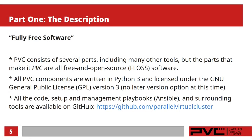All PVC components are written in Python 3 and licensed under the GNU General Public License, GPL version 3. At this time, I am strict with version 3 — I don't provide a later version option. That may change in the future, but I'm still apprehensive about the future of the Free Software Foundation. All the code, the setup and management playbooks which use Ansible, and all surrounding tools are available on GitHub at the address on screen. You can look at the entire codebase, inspect it, and change it if you want.